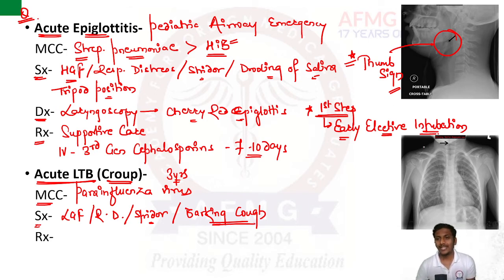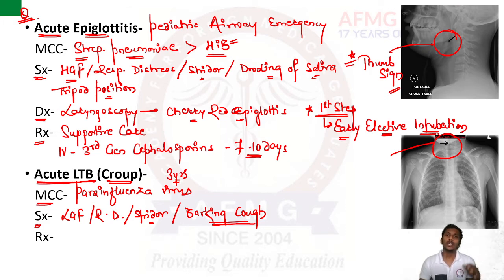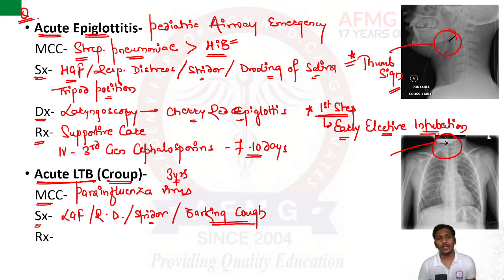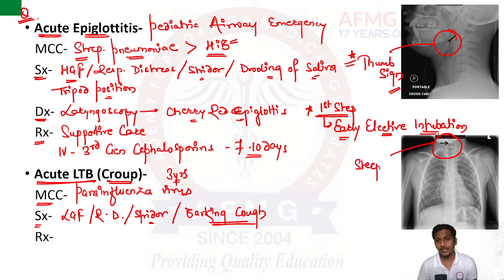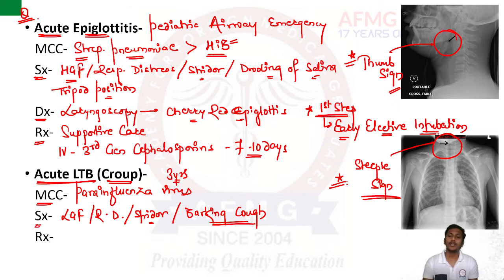For diagnosis, a chest X-ray PA view is taken. On chest X-ray, there is narrowing of the upper airway. The narrowest part of the pediatric airway is at the level of the subglottis. In acute LTB or croup, this narrowing resembles the steeple of a church — therefore known as the steeple sign. Remember: steeple sign is a feature of croup, whereas thumb sign on lateral X-ray neck is a sign of acute epiglottitis.